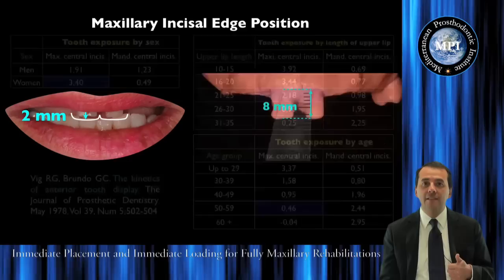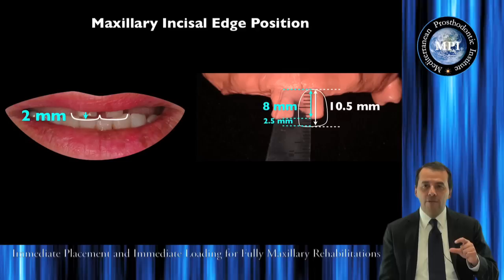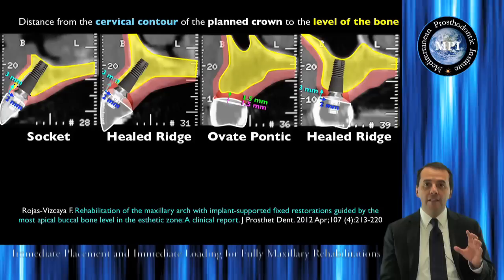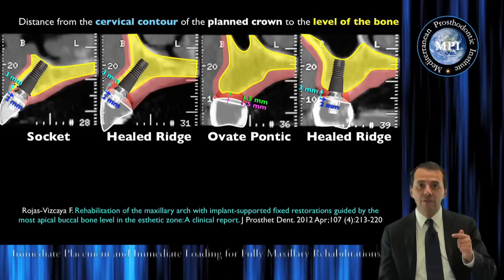The determination of the incisal edge of the maxillary central incisor, and how we can create the natural size crown in relation with the existing bone of the patient. How we can create the maxillary incisal curve, and how we can make the analysis of the new crown that we designed for our patient, in relation with the existing bone.